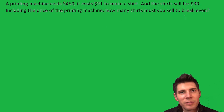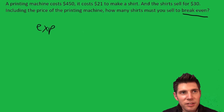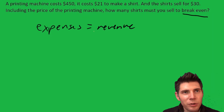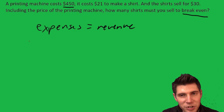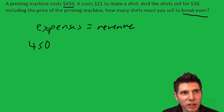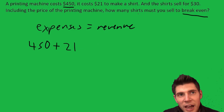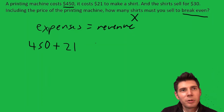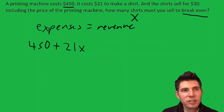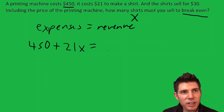Anytime you have one of these break-even problems, it's always expenses have to equal revenue, and then you solve for whatever variable there is. So our expenses are: first we gotta buy a machine, so that's $450 plus $21 for each shirt. The shirts are what we're being asked about — how many shirts — so that's gonna be our X. The question is always a variable. So $450 plus 21X.